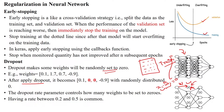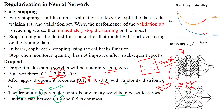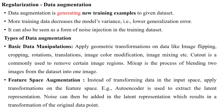After applying dropout to these weights, we are dropping two weights — making them zero using the dropout method, which is randomly distributed over the weights. The dropout rate parameter controls how many weights are set to zero. The rate ranges from 0 to 1; mostly 0.2 or 0.5 is used, and it gives good accuracy for the model.